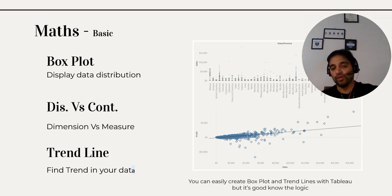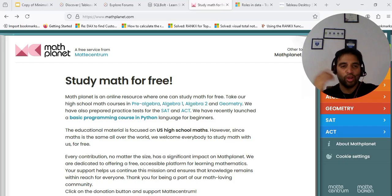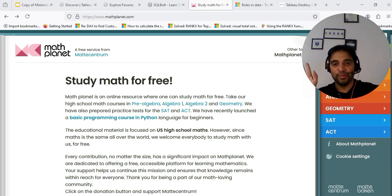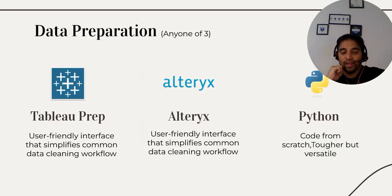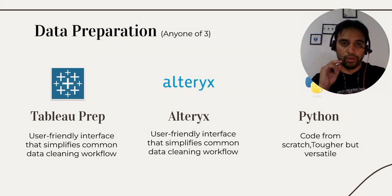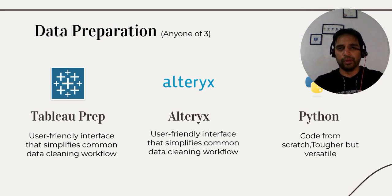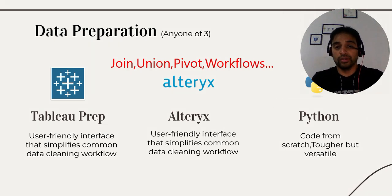Basic mathematical concepts will also be handy when creating visualizations like box plots, when discussing discrete versus continuous — which is a mathematical concept — or when working with trend lines or forecasts. Sites like Math Planet let you study math for free; just don't go too deep. Basic is more than enough at this stage. When I talk about data preparation, I'm talking about transformations such as joins, unions, pivots, and workflows. Tableau Prep and Alteryx serve more or less the same purpose — Tableau Prep comes with the Tableau Creator license, while Alteryx is a separate company. With Tableau you have free lifetime access, but with Tableau Prep and Alteryx you have only a 15-day trial version.